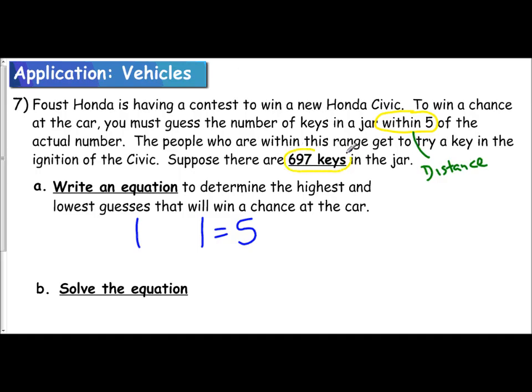And to set up the equation from here, I want you guys to do a little table to see why we set it up a certain way. If you were to guess there were, let's say, 700 keys in the jar, that's your guess. There's actually 697. So if we were to think about how much were you within that guess, you would say, well, I'm within three of that guess. Well, then how do you get three from 697? You subtract them.